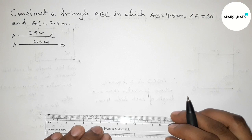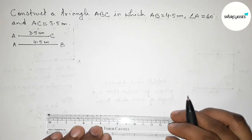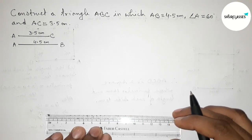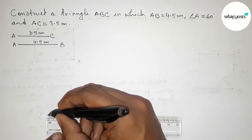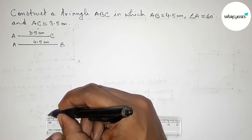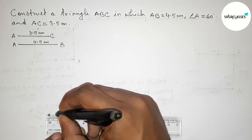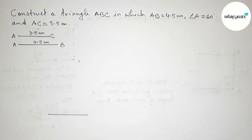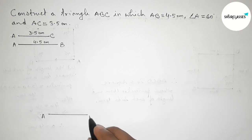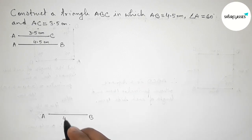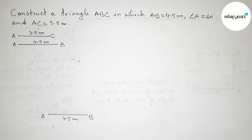Now drawing side AB equals 4.5 centimeters. Starting from zero, this is the 4.5 centimeter line segment. Taking point A here and point B here, so AB equals 4.5 centimeters.